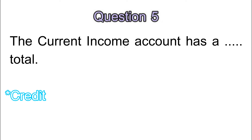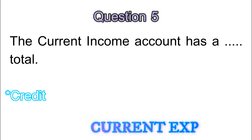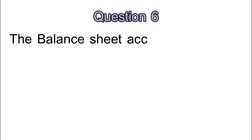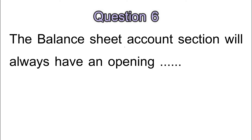Question 5: the current income account has a credit total. Remember, your current income account will always have a credit total, just as your current expenses account will always have a debit total. Question 6: the balance sheet account section will always have an opening balance. This is straightforward — even if that balance is zero, it will always have an opening balance.